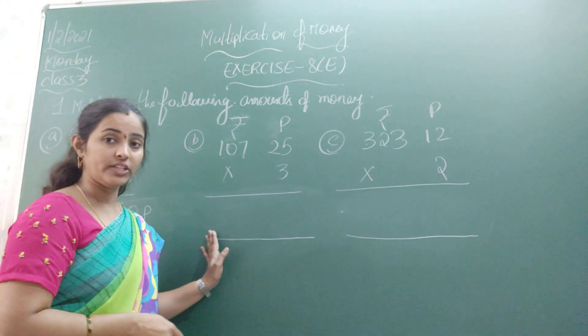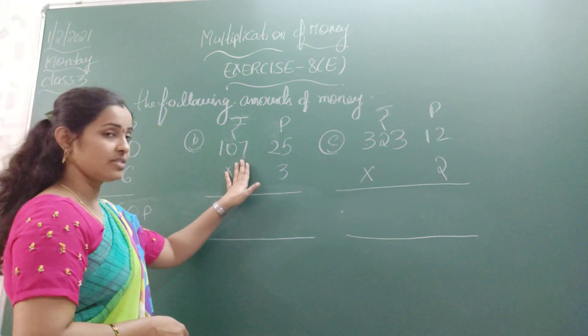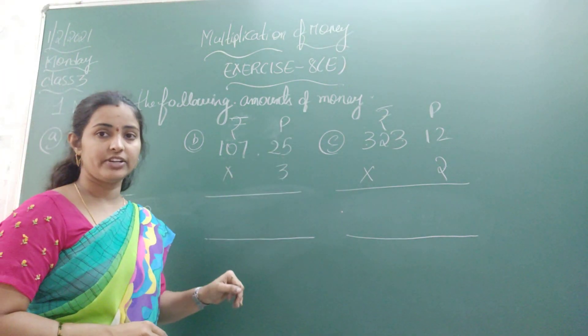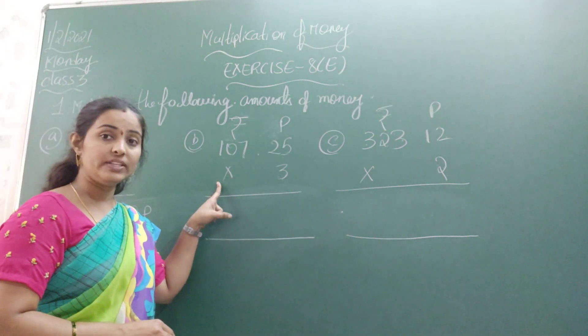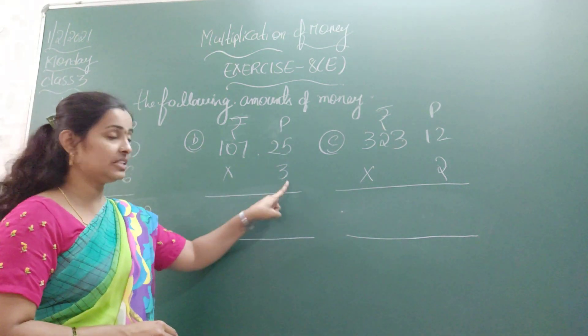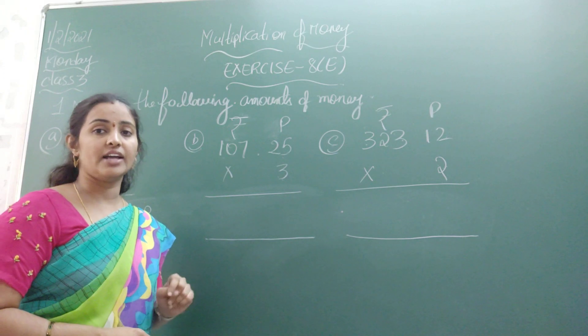Now let's look at the next question. What is given here? 107 rupees and 25 paise. Multiply with 3. Let us start multiplying.